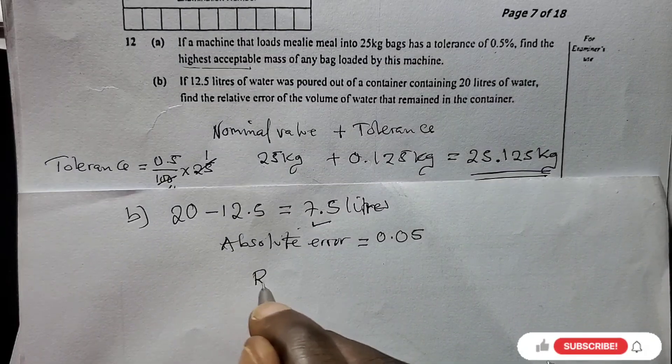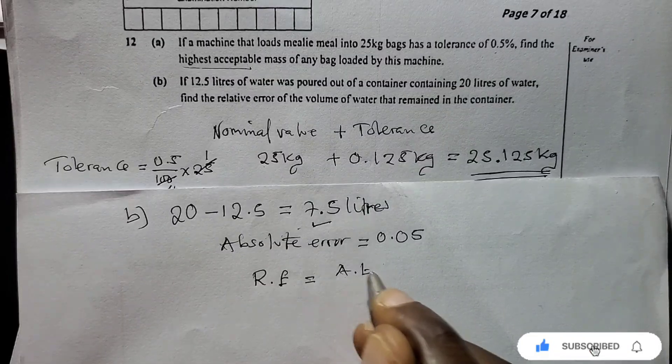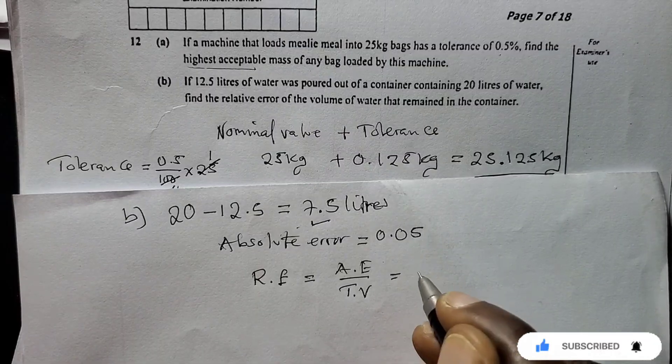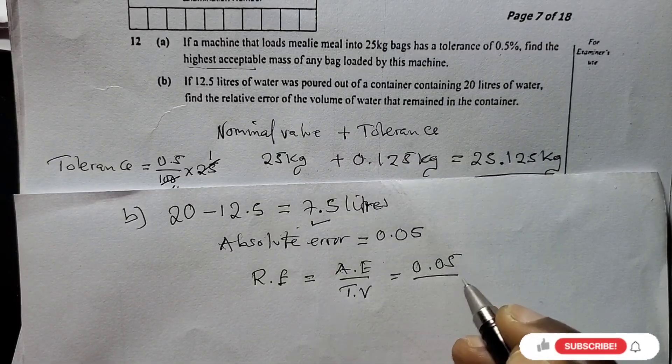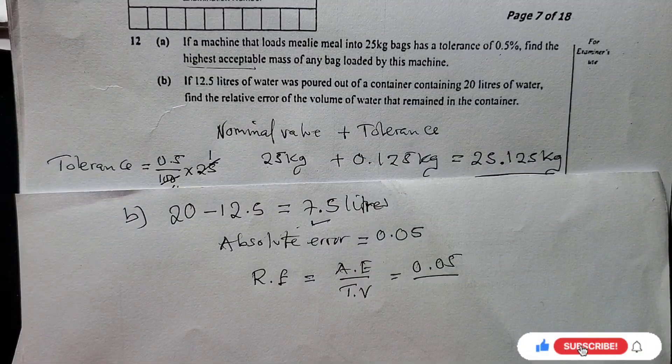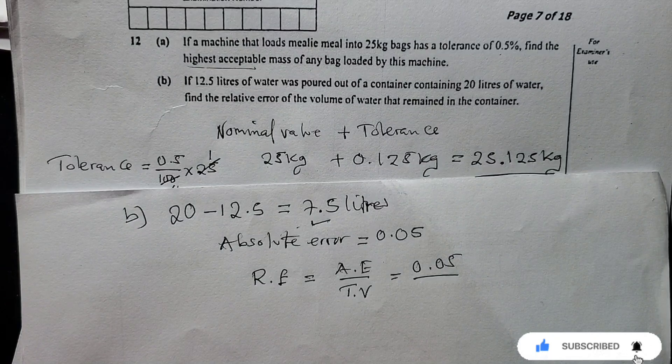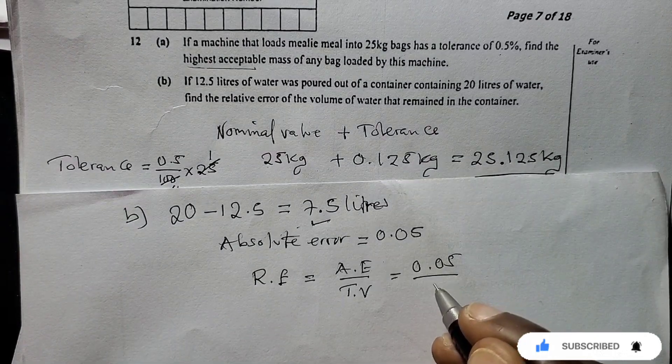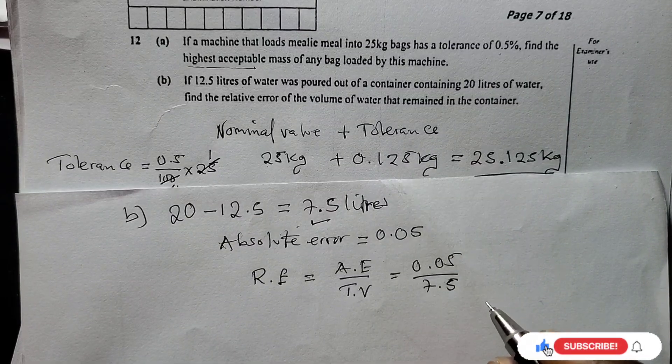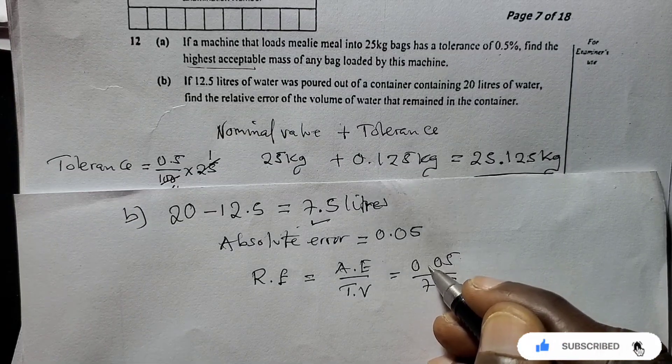To find the relative error: relative error equals the absolute error over the true value. The absolute error is 0.05. The true value is the amount of water that remained after 12.5 was poured out, so we have 7.5. Which number between the two has higher number of decimals? This one has two.